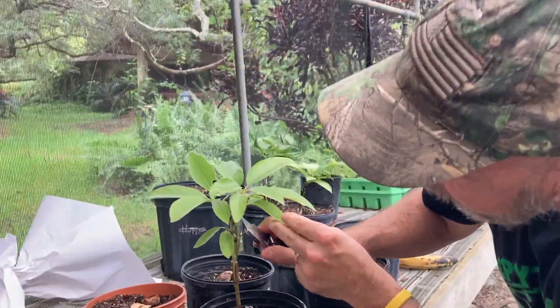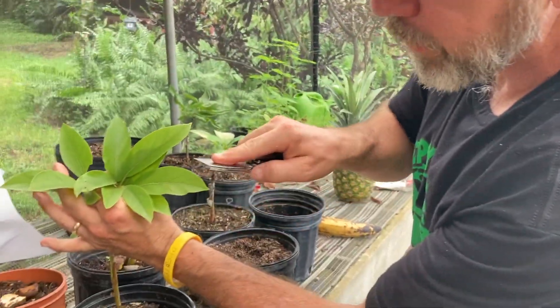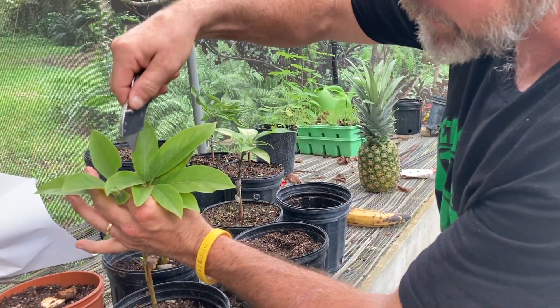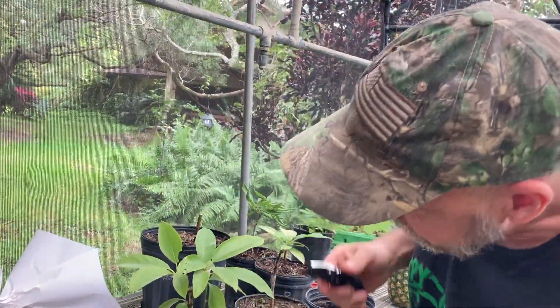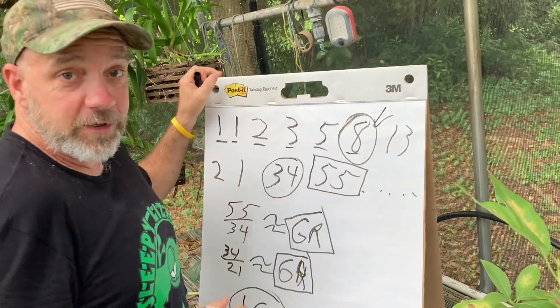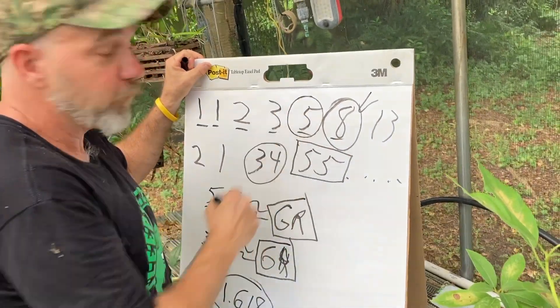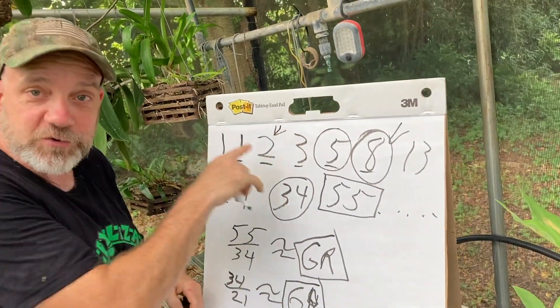Don't believe me? Go out in your backyard and test it right now. While you're out there counting petals, find something that has leaves and count how many leaves come off of each stem. For example, this little avocado tree right here — I've got a unique stem sprouting at this Y. Let's count the leaves: one, two, three, four, five, six, seven, eight. That's eight. Let's look at the stem right next to it: one, two, three, four, five. And the stem just below those: one, two. The numbers were eight, five, and two — all Fibonacci numbers.